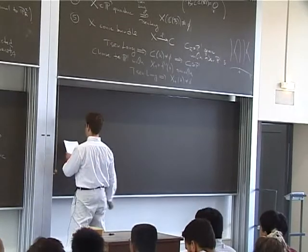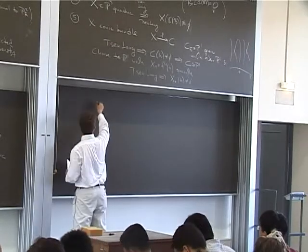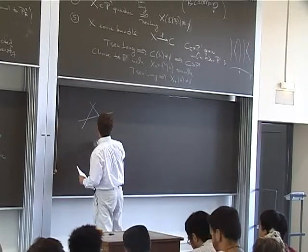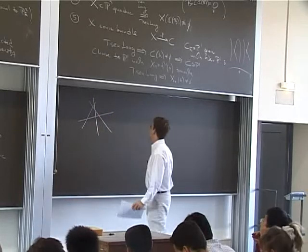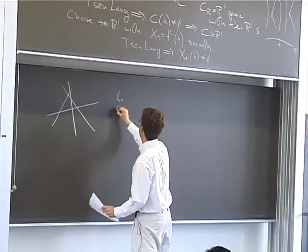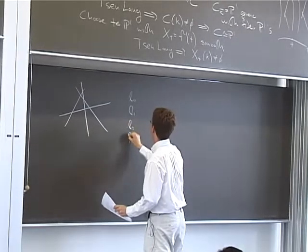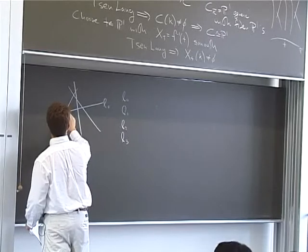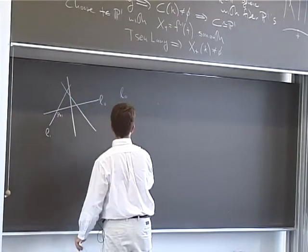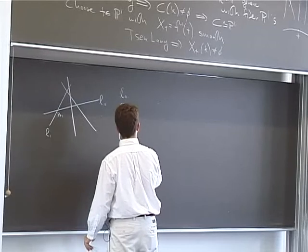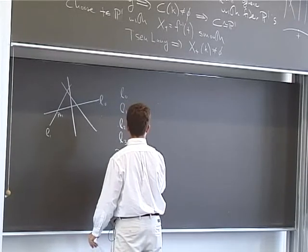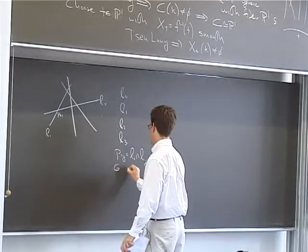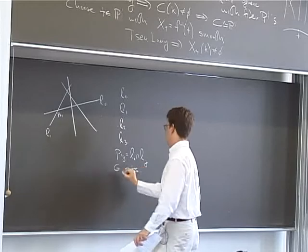So here's an example. So let's start off with four lines in general position. So let me call them L0, L1, L2, and L3. And also, we're going to be interested in pairwise intersections. Pij equals Li intersect Lj. So I have six intersection points altogether.